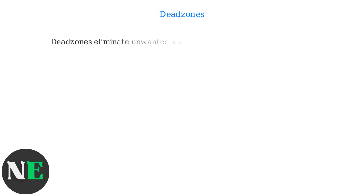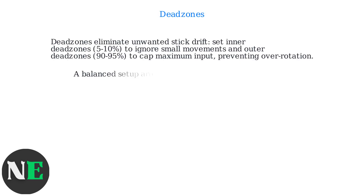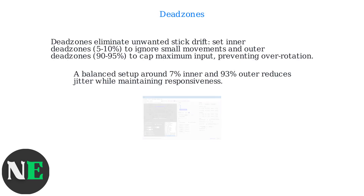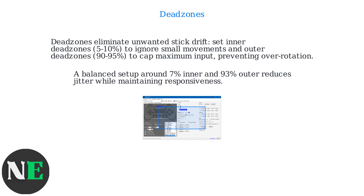Dead zones eliminate unwanted stick drift. Set inner dead zones from 5% to 10% to ignore small movements, and outer dead zones from 90% to 95% to cap maximum input, preventing over-rotation.